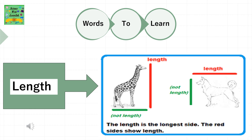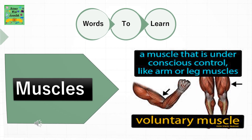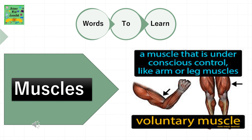Length: the length is the longest side. The red sides show length. Muscles: a muscle that is under conscious control, like arm or leg muscles, is called a voluntary muscle.